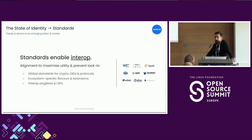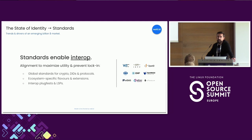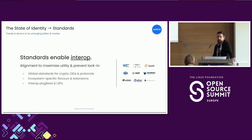Third topic: standards enable interoperability. Decentralized identity, as the name says, is a decentralized system, so data must easily flow from one system to another. This can only happen if we have global standards. The most important ones are definitely around W3C verifiable credentials, ISO mobile driving license, SD-JWTs, and OpenID Connect as the protocol for data exchange. We moved from a world where everybody basically built their own credential formats and protocols five years ago, to a world where right now we have been able to do interoperability testing with a bunch of organizations globally based on these emerging standards.